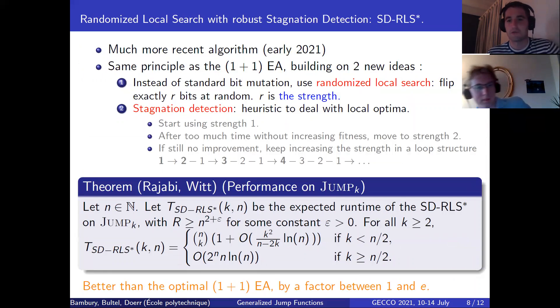But this speedup does not always occur. Exactly, so now we'll move on to a third algorithm, the randomized local search with robust stagnation detection, or for short SD-RLS*. And we'll see that the k choose delta speedup does not happen on this one, which we believe is quite interesting. So this algorithm is much more recent. It was introduced in 2021.